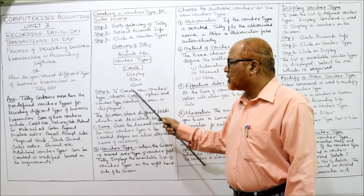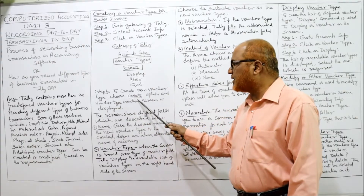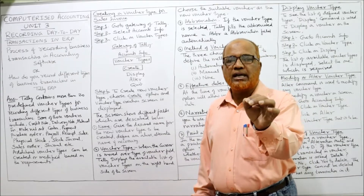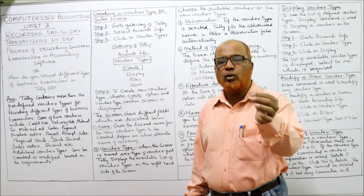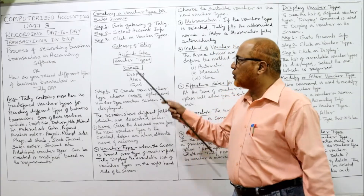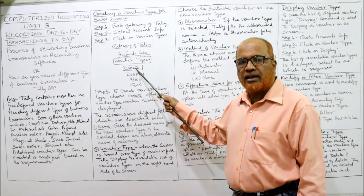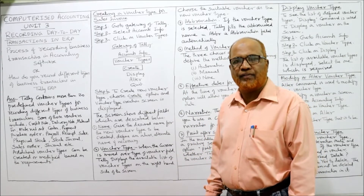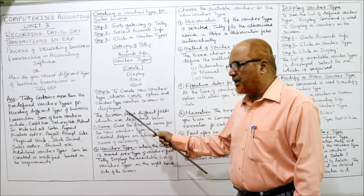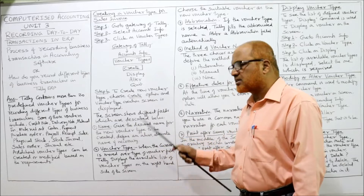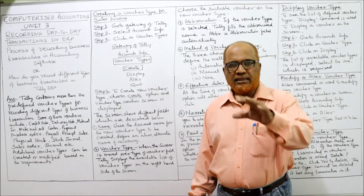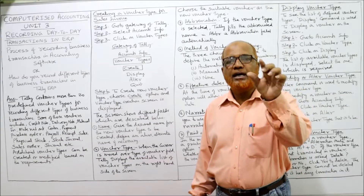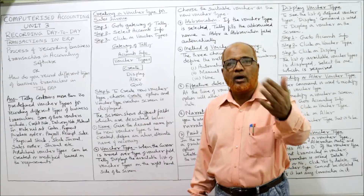Step 4: To create a new voucher type, choose the Create option and the Voucher Type Creation screen is displayed. In order to create the voucher type, click Create. When you click Create, a screen will appear asking you to fill a number of fields.